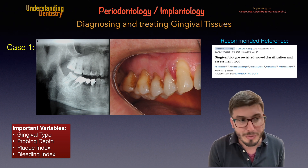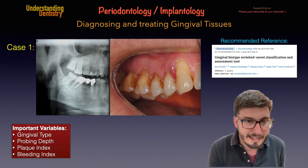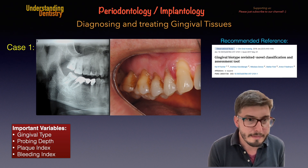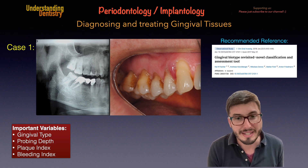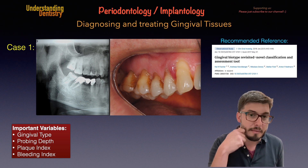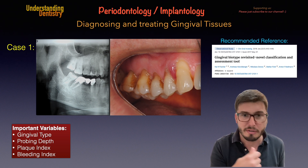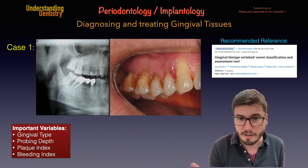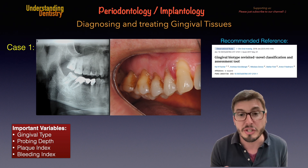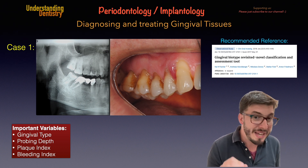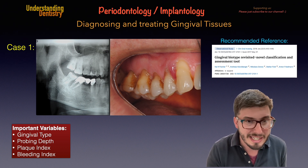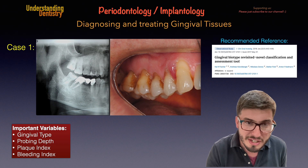One tip here: usually patients brush worse in the posterior regions, because maybe they are not reaching properly. Most patients not doing very good oral hygiene find it easier to focus on the anterior teeth. So pay attention to the posterior regions, because in many cases we are going to see differences there.